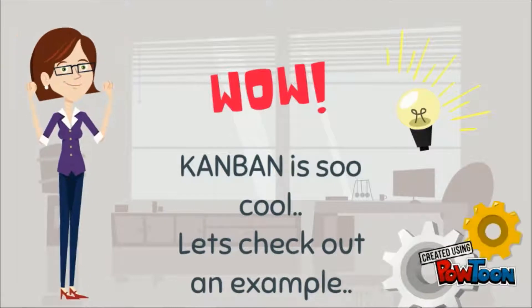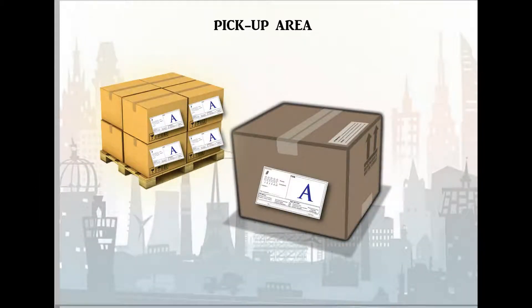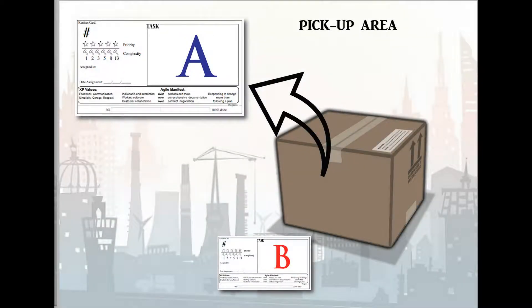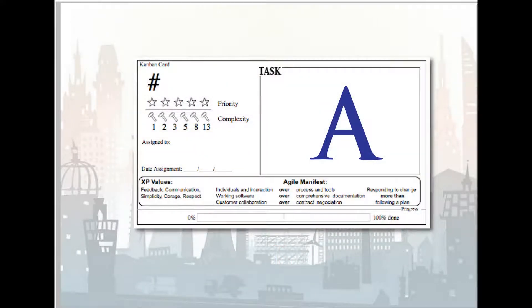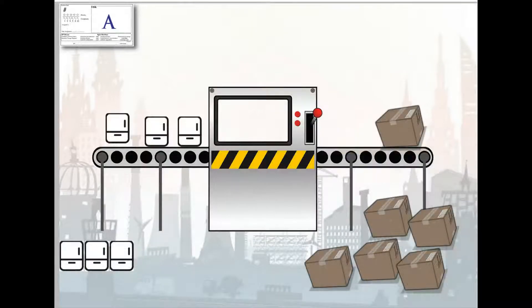Let's check out an example. There are two kinds of Kanban that are used for managing parts in Toyota. Let's look at the first type, the Production Instruction Kanban. An operator would remove the Production Instruction Kanban A and he retrieves the parts at the pickup area. This Kanban card will now be used as an instruction to produce only the exact number of parts that are indicated in the Kanban card.